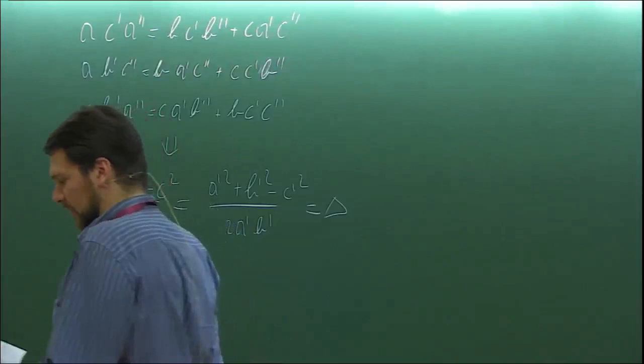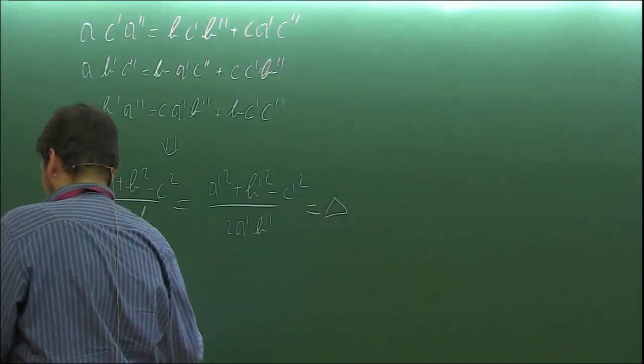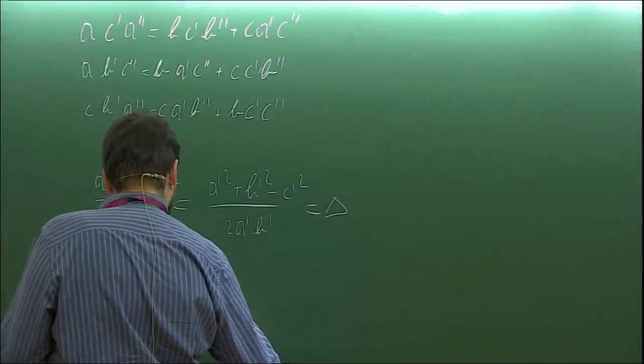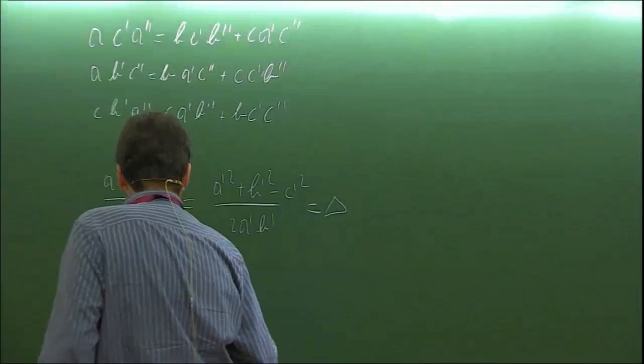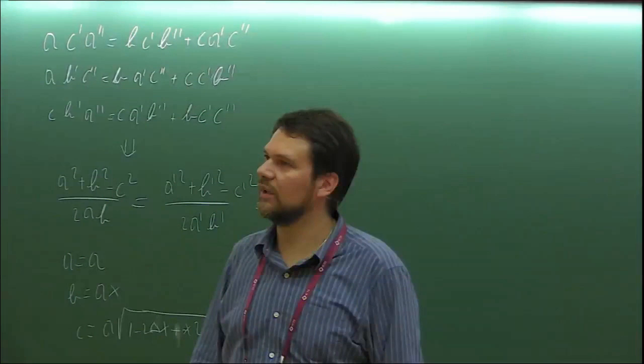One option is a = a (normalization), b = ax (variable), c = a√(1 - 2δx + x²), which when plugged in gives delta. But this is not a very convenient parametrization — you have square roots and branch cuts — so you prefer a cleaner one. Several equivalent parametrizations exist.